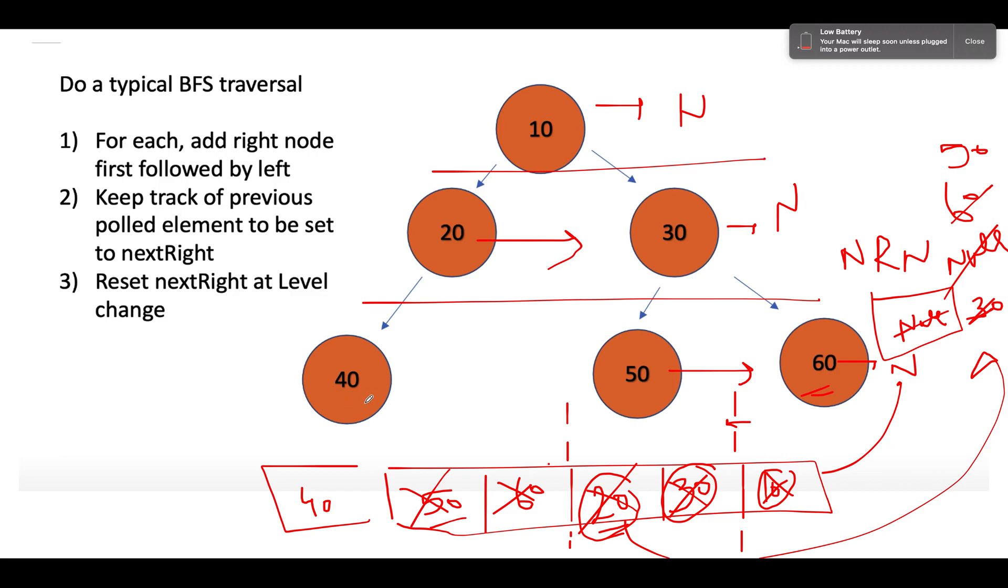Let's continue the process. The next element that we see is 40. 40's next will point to next right node, which is 50. So this gets updated to 50. And since it doesn't have any child of its own, we are done with the iteration. There is no more element in the queue. And we have successfully updated the next node for each node present in the binary tree.